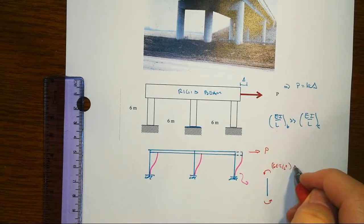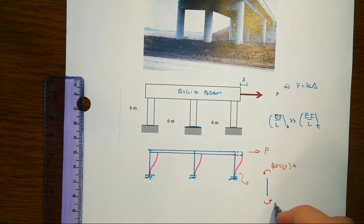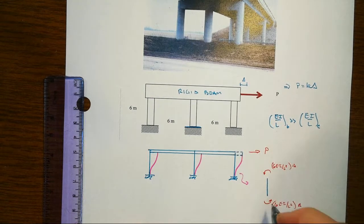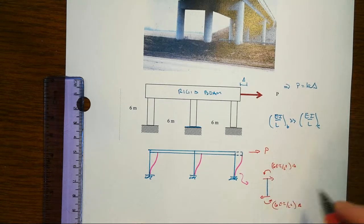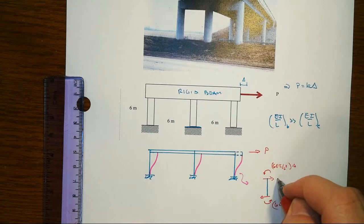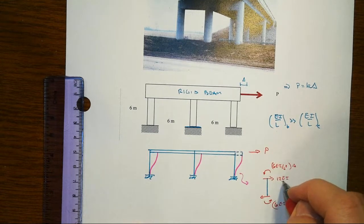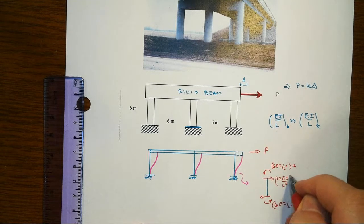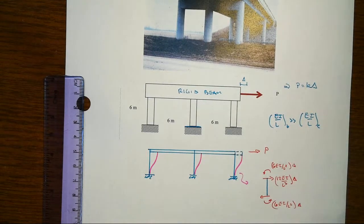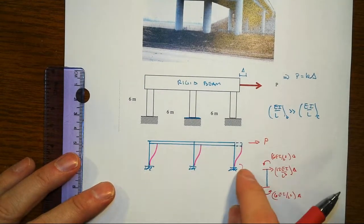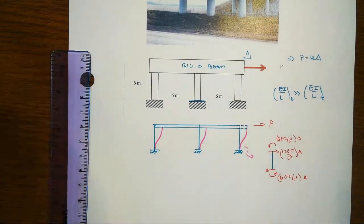And from that we would find out that the shear forces that go along with this would be equal to 12EI over L cubed times delta, whatever the delta might be. And so note these are three springs in parallel—their stiffnesses will add together.